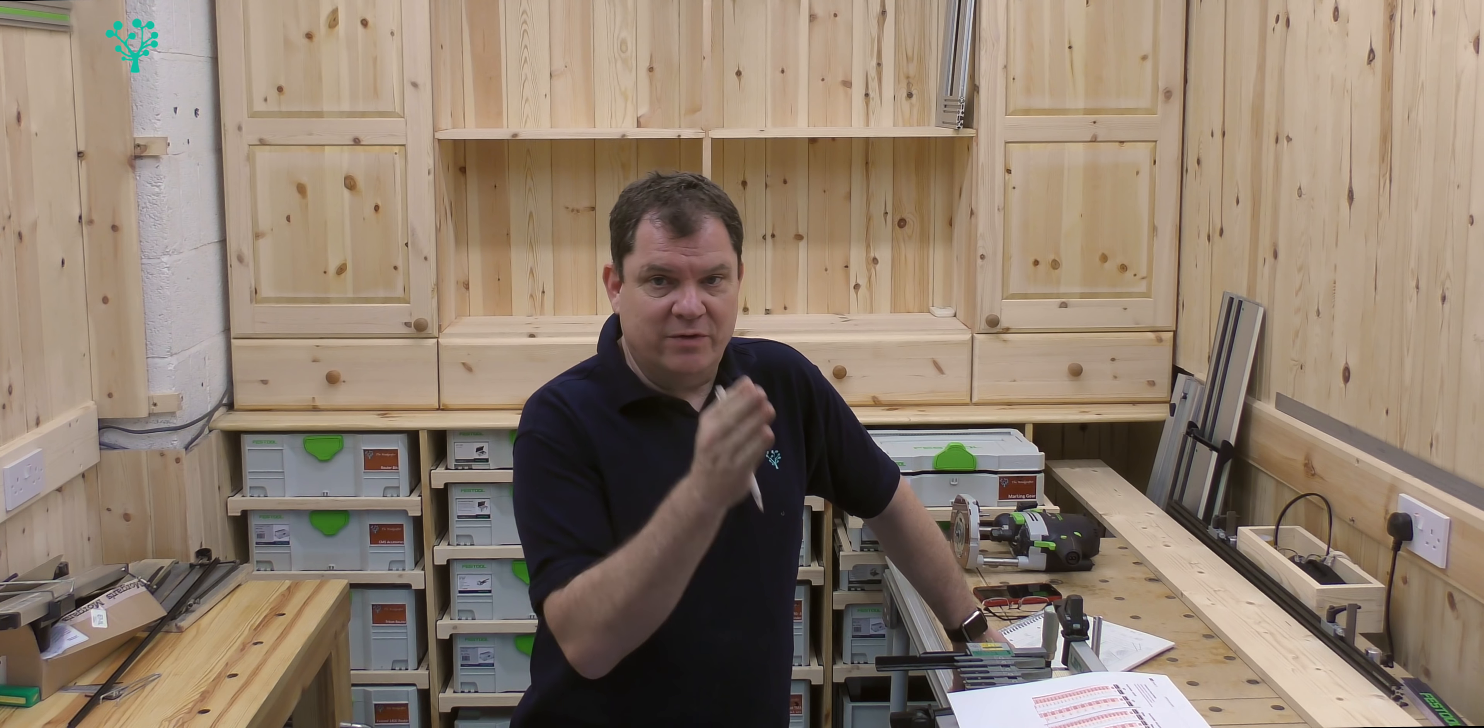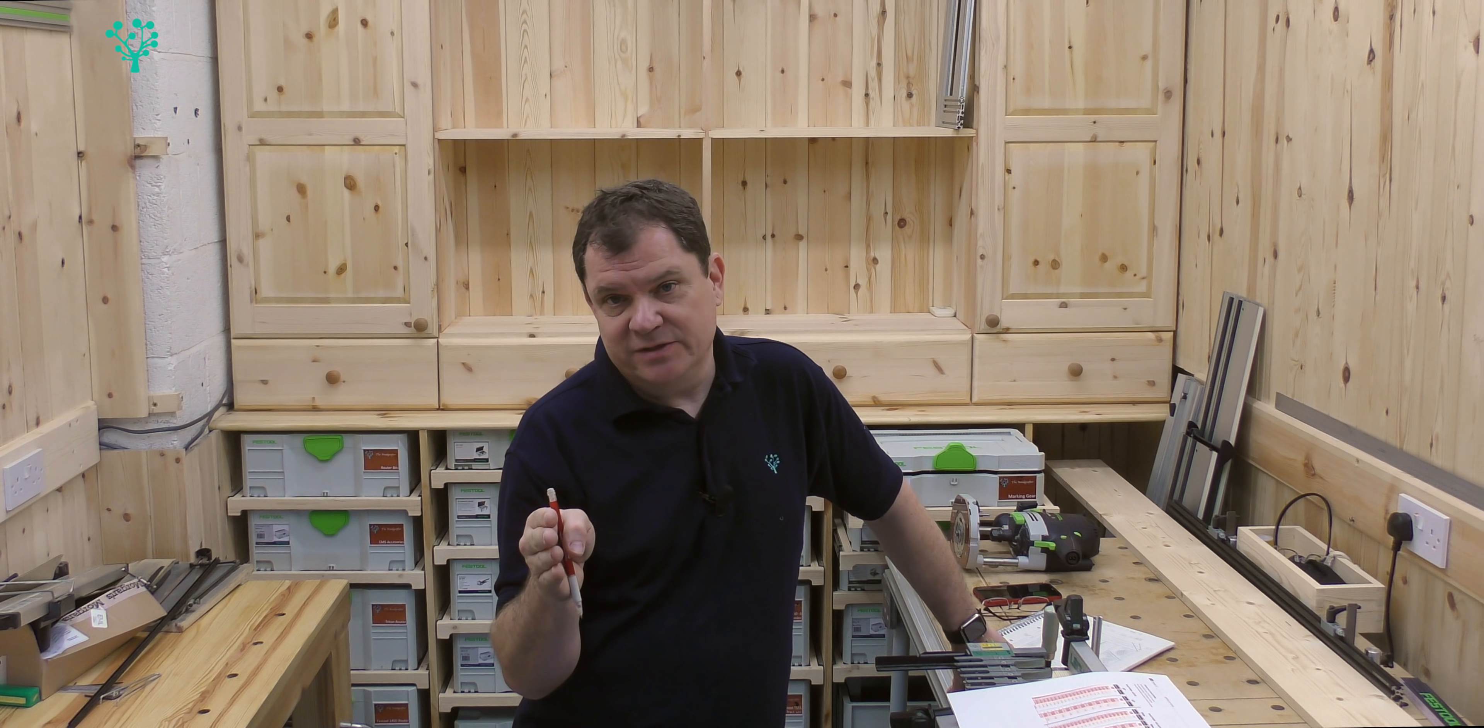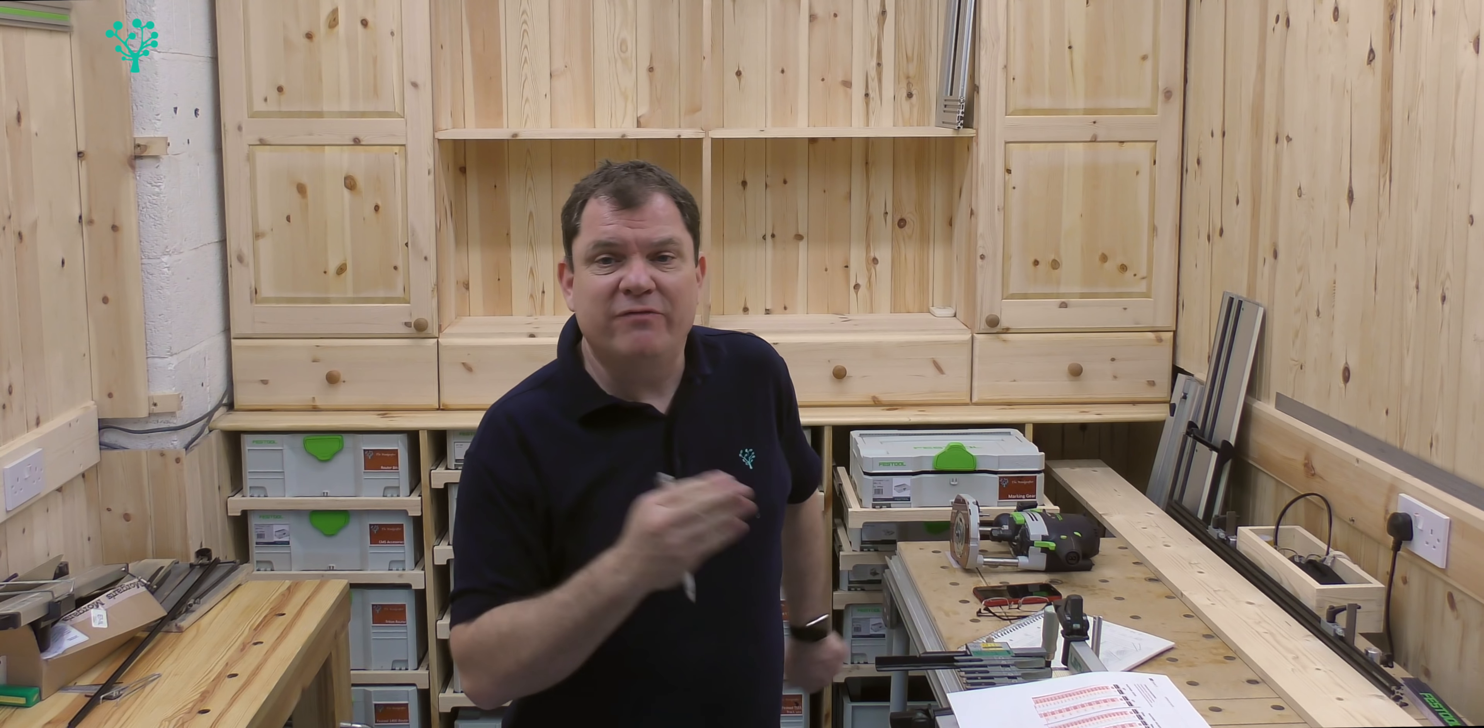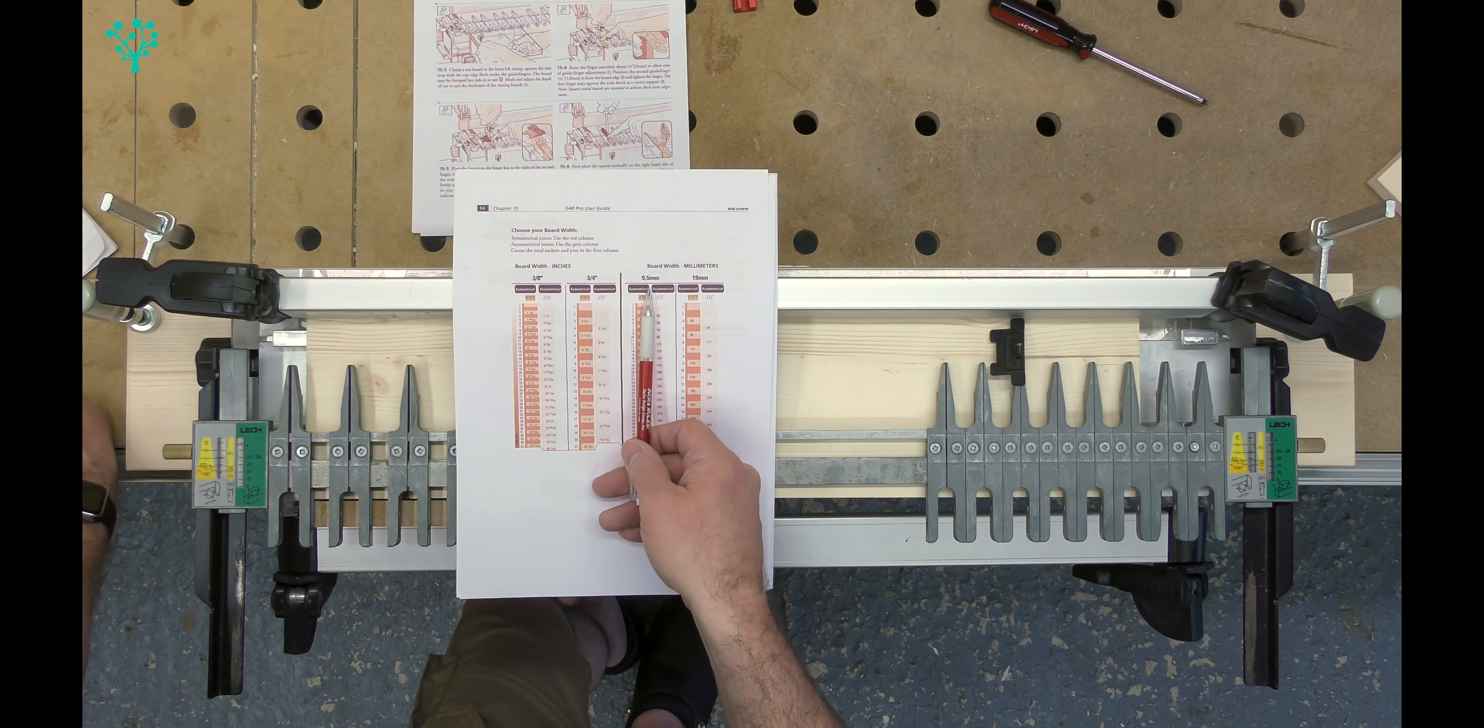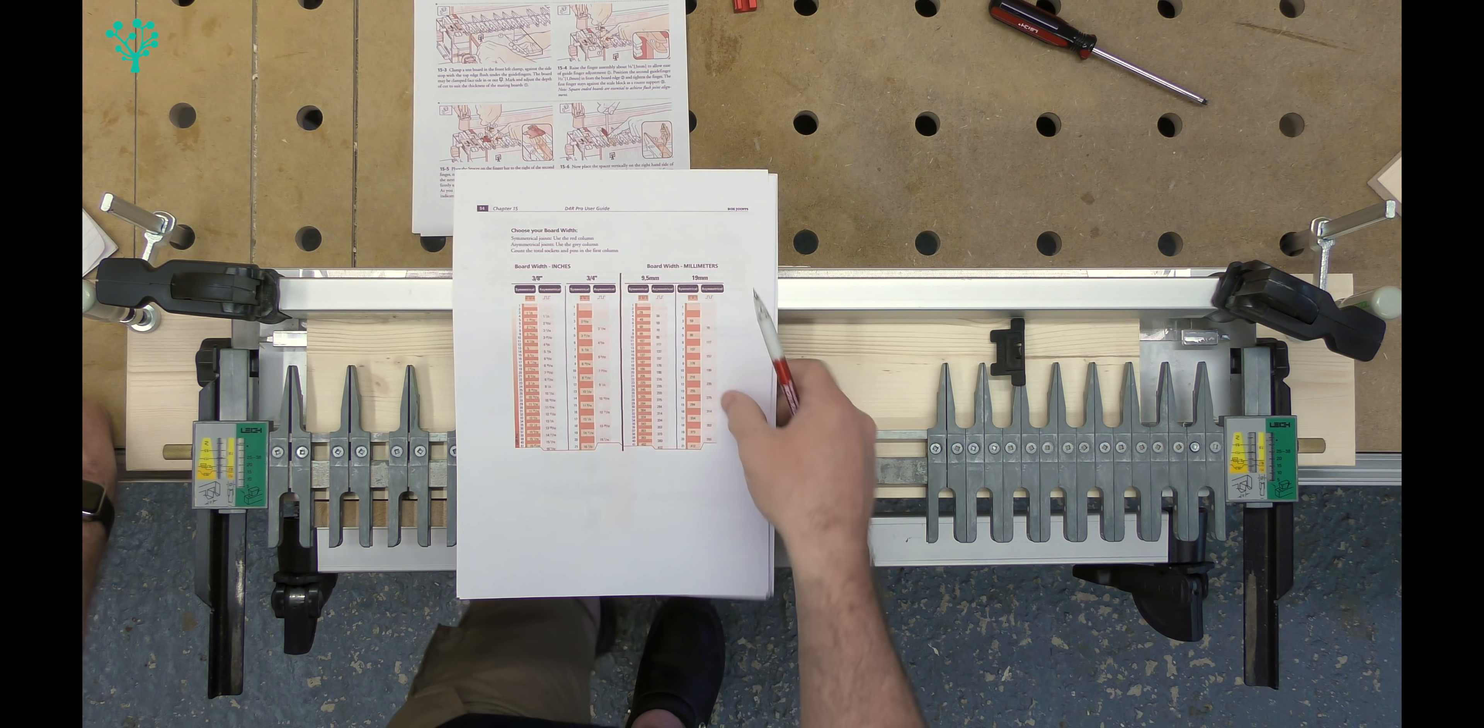So out of the box on the Lee DR4 Pro, we can create both 9.5 millimeter thick fingers and 19 millimeter thick fingers. Which is great. And anything you need to do that comes with the kit. We've not spent any additional money.